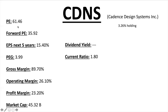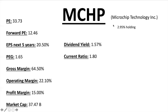Cadence Design Systems, ticker CDNS, has a PE ratio of 61.46 — overvalued right now. Forward PE 35.92, EPS next five years 15.4%, PEG just under four — don't really like those numbers, but not every stock in the ETF is going to be phenomenal. Gross margins are huge at just under 90% — not spending a lot on cost of goods sold. They're putting money into R&D, hiring more people, more general and administrative expenses, so operating costs are higher. Profit margin 23.2% — still over 20% and should increase over the years. Market cap $45.32 billion, no dividend, current ratio 1.80.